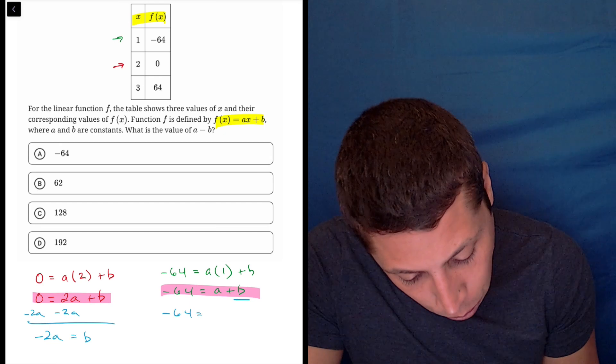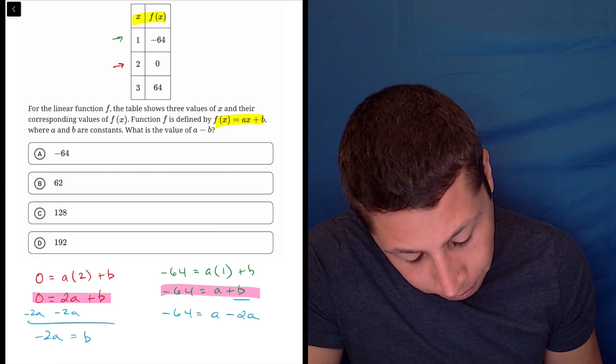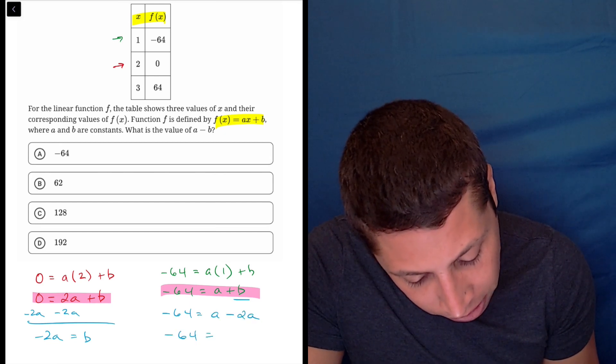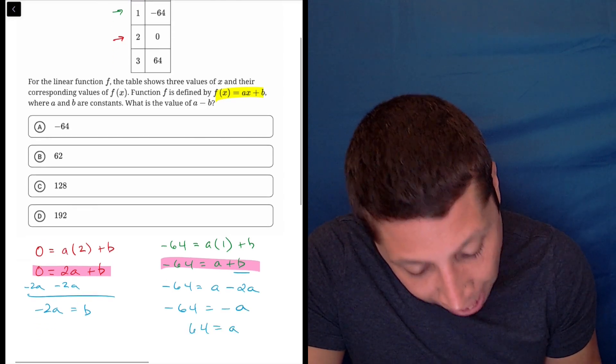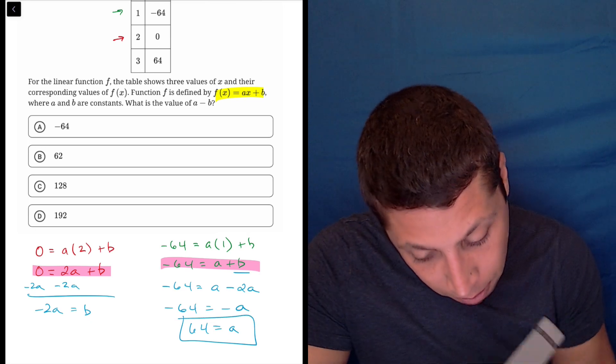So negative 64 is equal to a minus 2a. So negative 64 is equal to negative a, and 64 is equal to a. So that's nice, that's one of the numbers that I need.